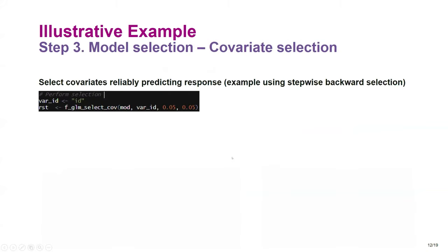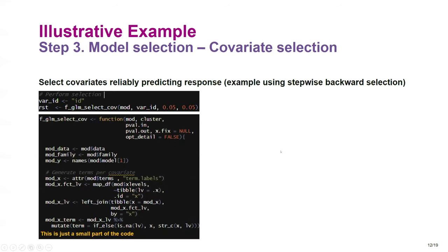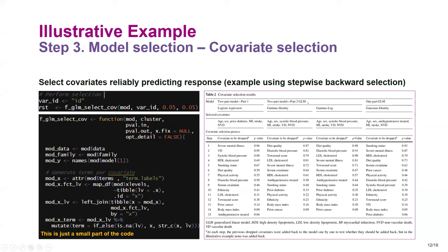After specification testing, we select covariates reliably predicting the response. I use stepwise backward selection. Because we use multiple records per participant, we need cluster robust standard errors. I wrote the whole stepwise backward selection process to generate cluster robust standard errors for covariate selection. Here are the selection results for each model: the part-one logistic model, two promising second-part models, and the one-part GLM.